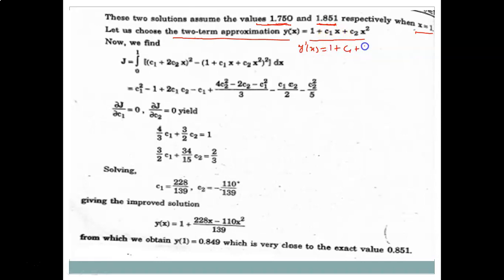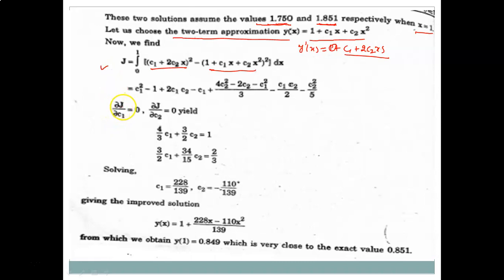With y(x) = 1 + c₁x + c₂x², we have y'(x) = c₁ + 2c₂x. Substituting y' and y² into the functional J and simplifying gives an expression in terms of c₁ and c₂. With two constants, to find the extremum we set ∂J/∂c₁ = 0 and ∂J/∂c₂ = 0, yielding two equations. Solving gives c₁ and c₂, and substituting back gives the two-constant approximate solution.